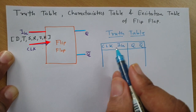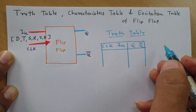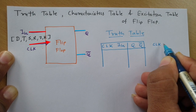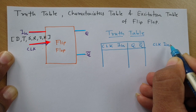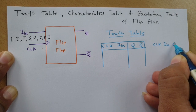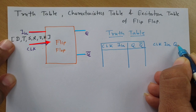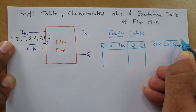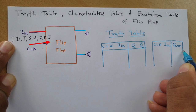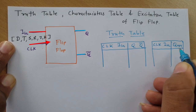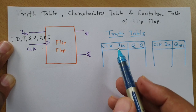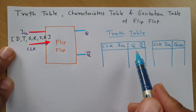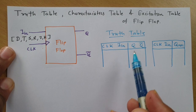From this truth table, we can make another table similar to it, where the inputs are clock and I-in terminal. Now the output is explained in terms of next state, which is Q(n+1), and that is identified based on the previous state. This is also a form of the truth table.